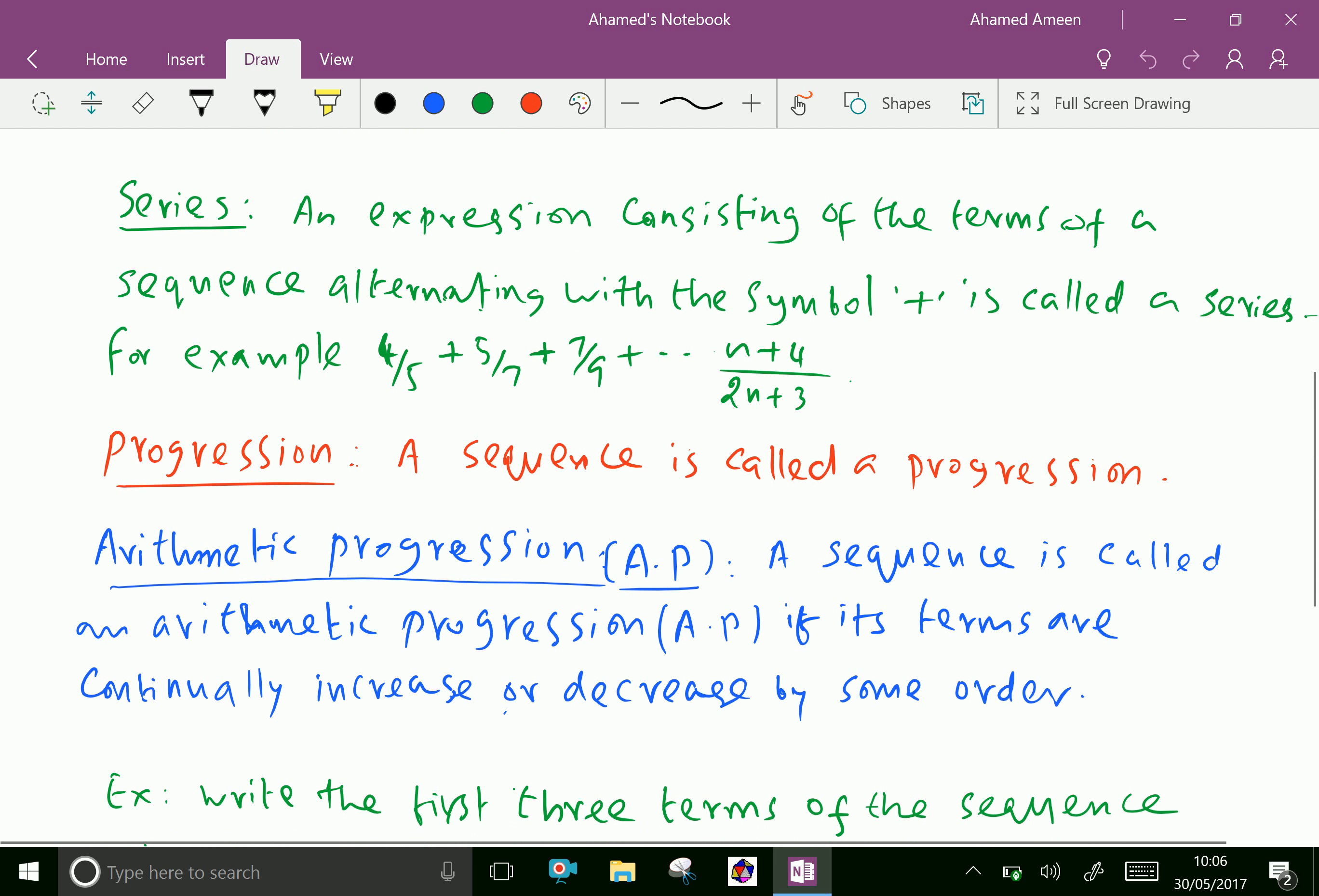Series. A series is an expression consisting of the terms of a sequence alternating with symbol plus is called a series. For example, 4 over 5 plus 5 over 7 plus 7 over 9 plus dot dot dot n plus 4 over 2n plus 3.